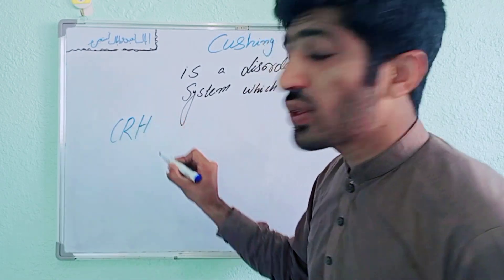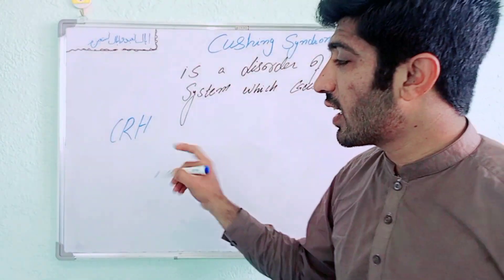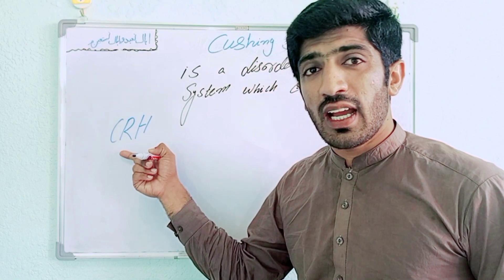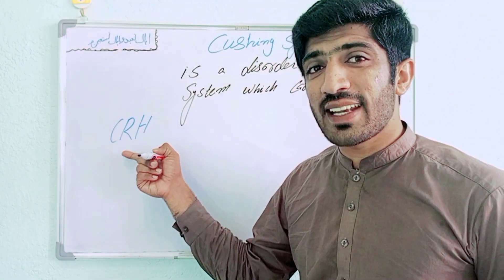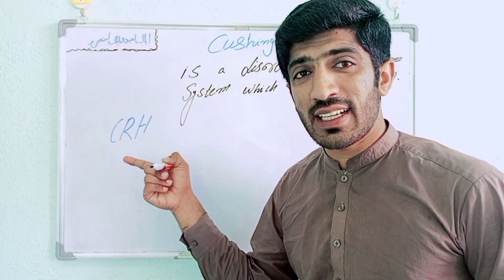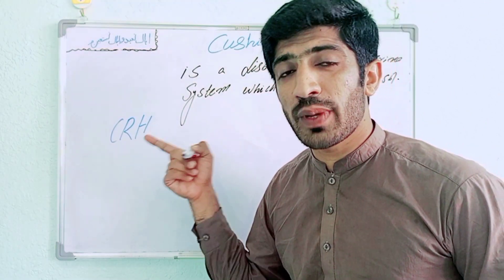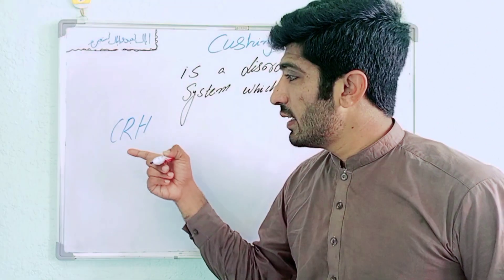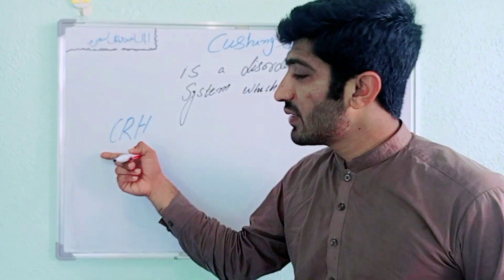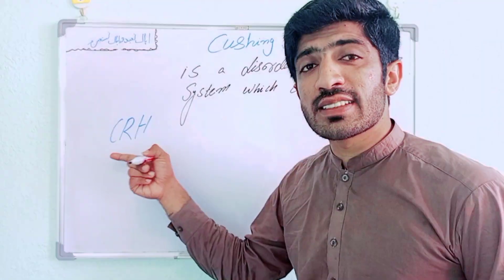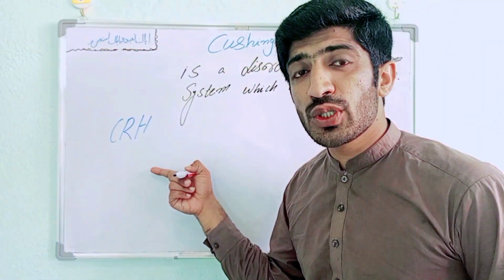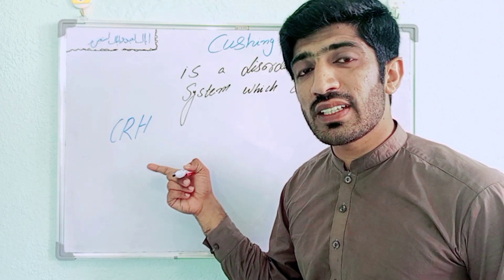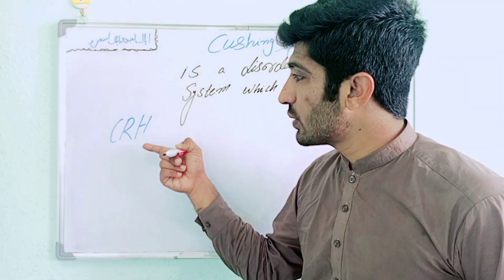CRH — Corticotropic Releasing Hormone — is created from the hypothalamus. Hypothalamus is not a gland; it is a part of the brain. But it creates different secretions and sends them to the pituitary gland to create different hormones at different times.